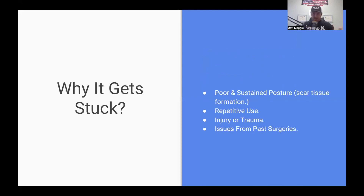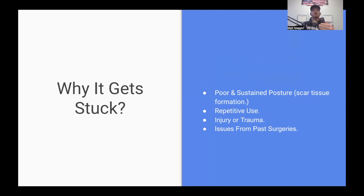Why does it get stuck? Number one is poor and sustained posture. Over time, we overuse our muscles, we sit too much, we don't move enough, and the muscles are constantly contracted. They don't get enough blood flow or oxygen. The body starts to lay down immature collagen fibers, which in turn becomes scar tissue. Scar tissue is like glue that gets inside the muscle, making it less flexible and weaker. Over time that scar tissue gets bigger and bigger, and eventually it gets stuck to the nerve and presents as a nerve entrapment — with numbness, aching, burning, and tension.